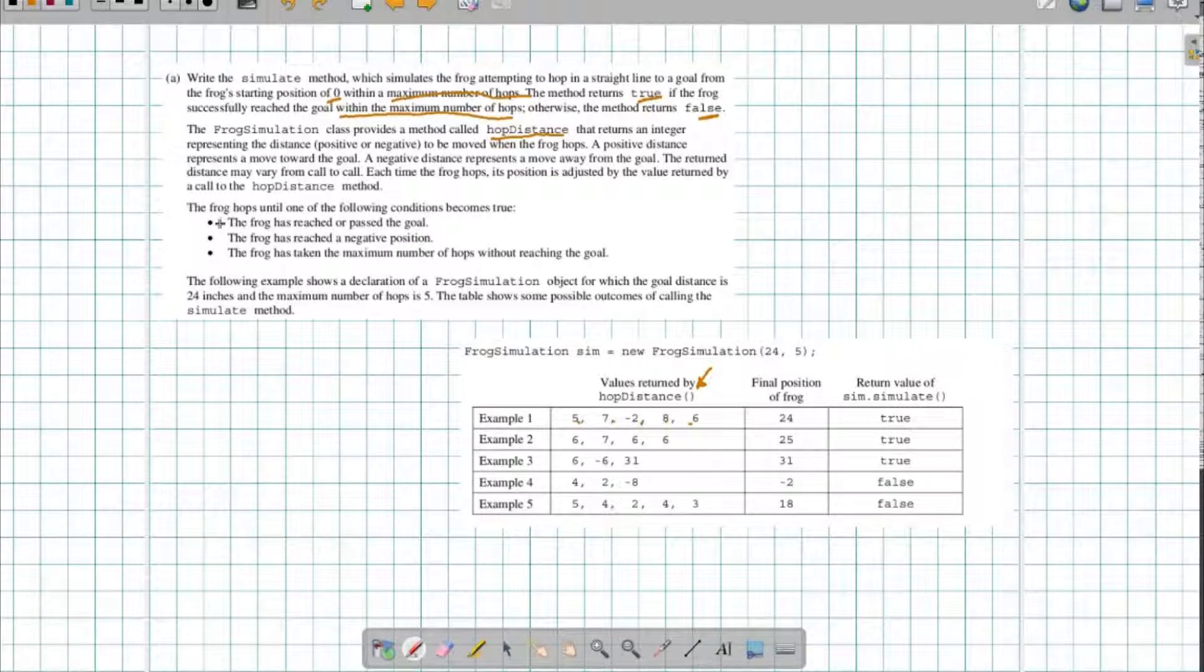And we are going to keep going until three things happen. So one, the frog has reached or passed its goal. Two, the frog has reached the negative position. Or three, the frog has taken the maximum number of hops without reaching the goal. So in other words, we're going to keep going unless one of these three things happens and we should get a true or a false when this is completed.